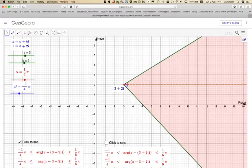In this video we're going to look at the inequality if the argument of z minus the complex number 3 plus 2i is between two angles, where this one is minus pi over 4 and this one is pi over 6.